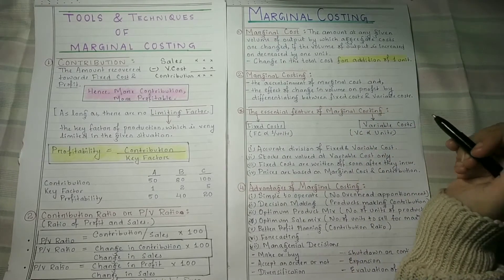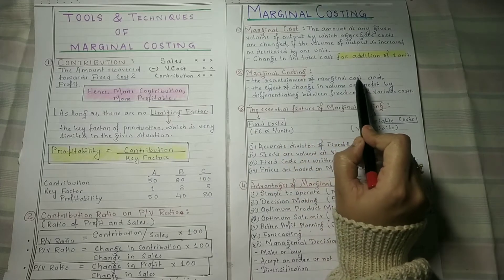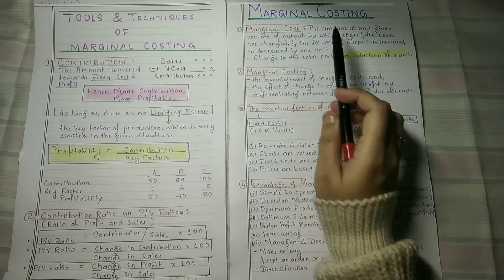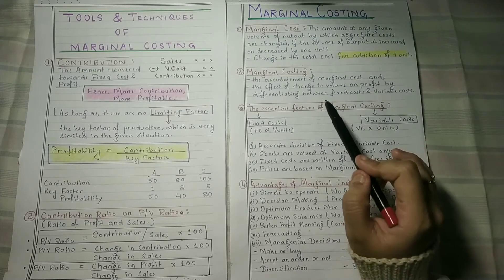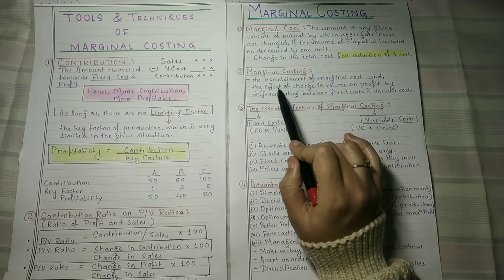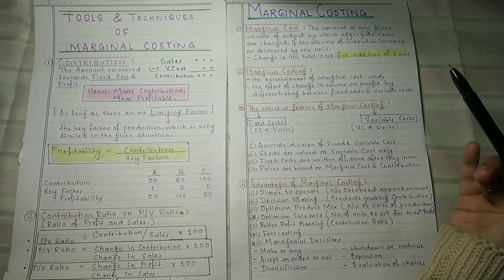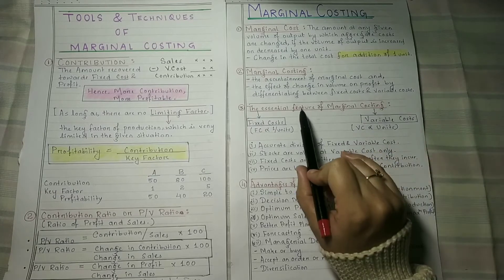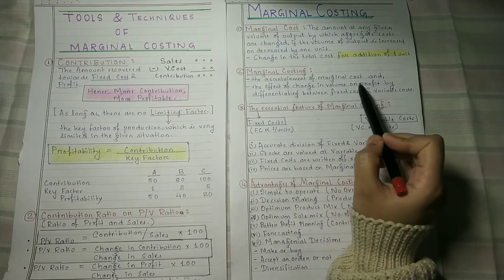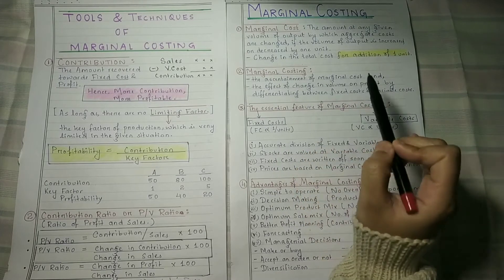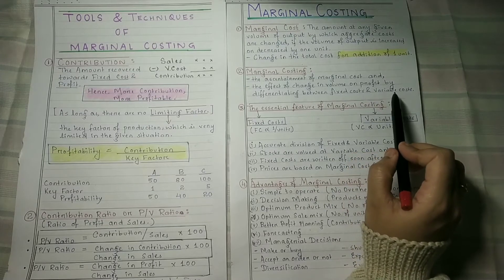Coming to the next point — marginal costing. The ascertainment of marginal cost and the effect of change in volume on profit is called marginal costing. We determine what the value of marginal cost is — that process or technique is called marginal costing. We also ascertain what change is happening in profit when we change the volume, and this is done by differentiating between fixed cost and variable cost.